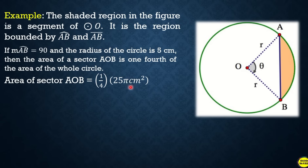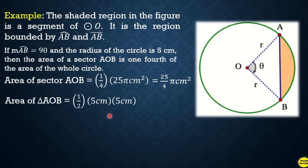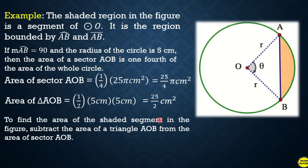So the area of sector AOB is (1/4) times 25π, which equals 25π/4 square cm. Next, find the area of triangle AOB: (1/2) times base times height, which is (1/2) times 5 times 5, giving 25/2 square cm. To find the area of the shaded segment, subtract the area of triangle AOB from the area of sector AOB.